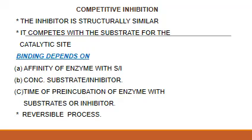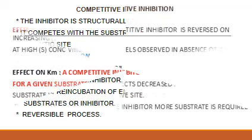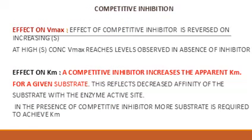It is a reversible process. Regarding the kinetics of competitive inhibition — what is its effect on Vmax? The effect of a competitive inhibitor is reversed on increasing the substrate concentration. If you keep on increasing the substrate concentration, at high levels of substrate concentration the maximum velocity will reach a level observed when there is no inhibitor, that is, in the absence of the inhibitor.